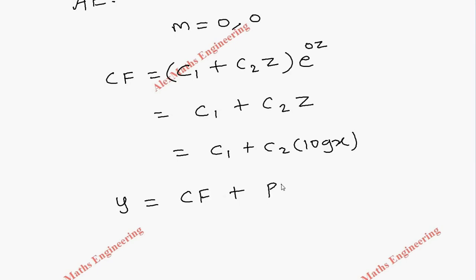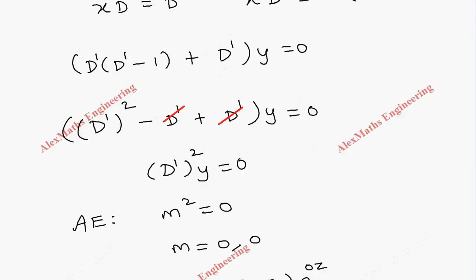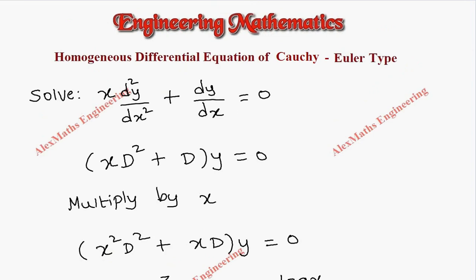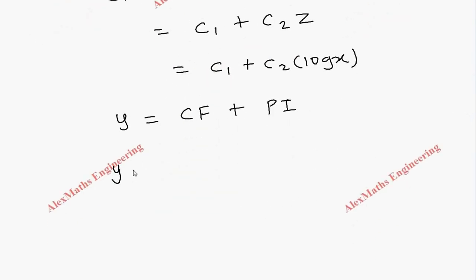And our complete solution is y is equal to CF plus PI. On the other side of the equation we have 0, so we don't have particular integral. Therefore our solution is y equal to c1 plus c2 into log x.